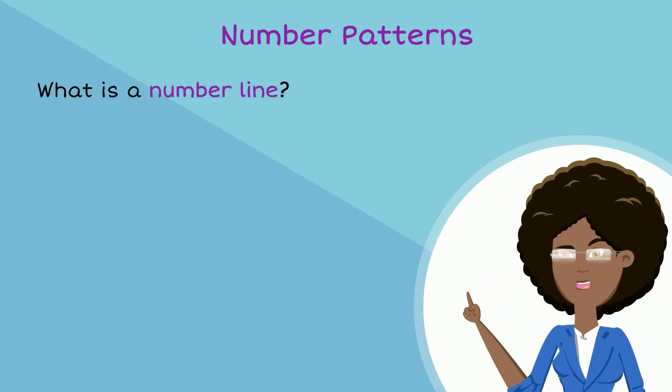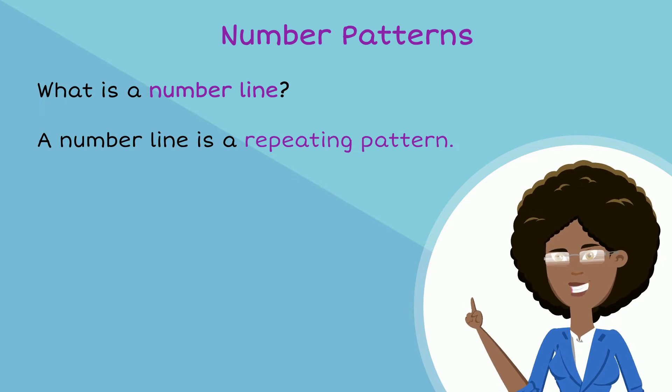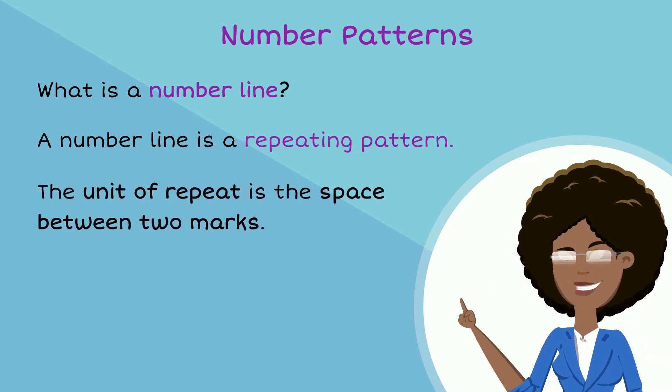What is a number line? A number line is a repeating pattern. The unit of repeats is the space between two marks.